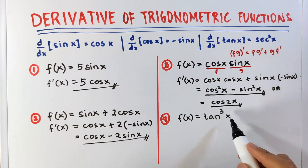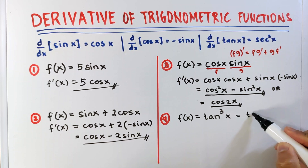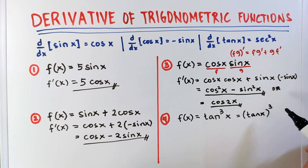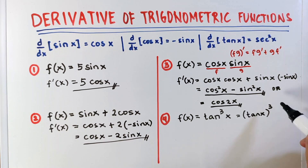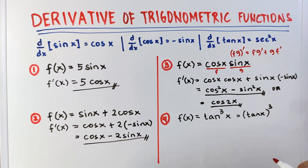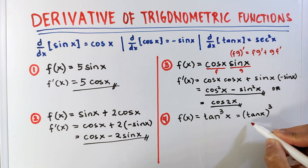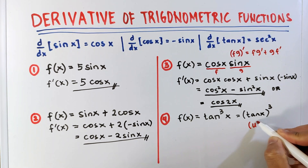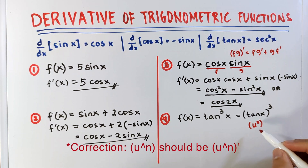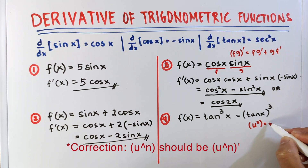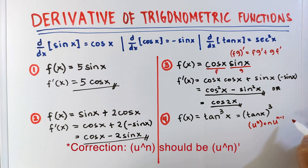Example number 4: we have f of x equals tangent cubed x. Take note that this is the same as tangent x, cubed — a composition of functions: u cubed as the outer function and tangent x as the inner function. To differentiate this, we need to use the power rule combined with the chain rule. The formula for the derivative of u raised to n is: bring down n as a coefficient, copy the base, subtract 1 from the exponent, and multiply it by the derivative of the base.